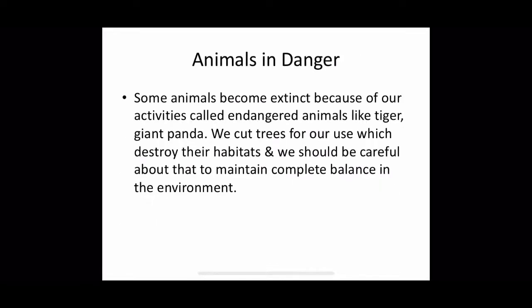There are some animals who are in danger. Some animals become extinct because of our activities — these are called endangered animals — like tiger and giant panda. We cut trees for our use, which destroys their habitats, and we should be careful about that to maintain a complete balance in the environment.